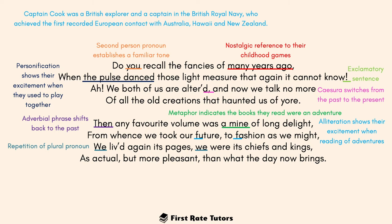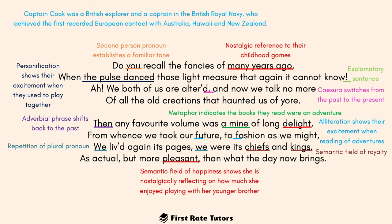The repetition of the plural pronoun 'we' — 'we lived again its pages, we were its chiefs' — shows the really close bond the speaker shared with her brother. What this illustrates is mourning the loss of childhood, as growing into adults has meant they no longer spend as much time together. They used to imagine they were chiefs and kings; these two words belong to the semantic field of royalty, illustrating the unbounded, childlike imagination they had. As you grow older, you become more cynical and put limitations on yourself, so she really misses this time when they could imagine they were royalty.